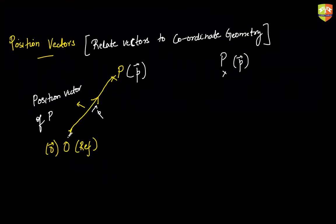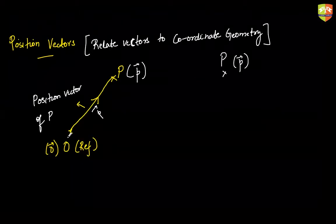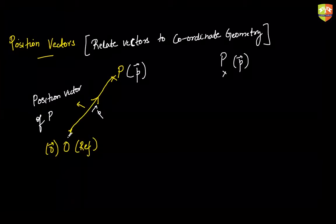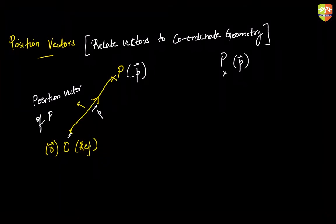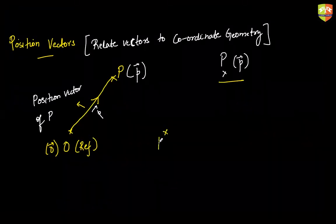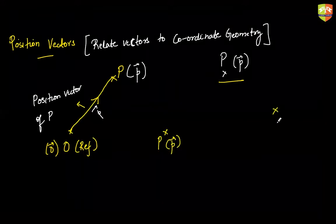Origin position is up to you to choose. Just as you pick an origin for a point like (1, 2) in coordinate geometry, in vectors you choose where the origin is. If P has a position vector p and Q has a position vector q, what would the vector PQ be in terms of small p and small q?